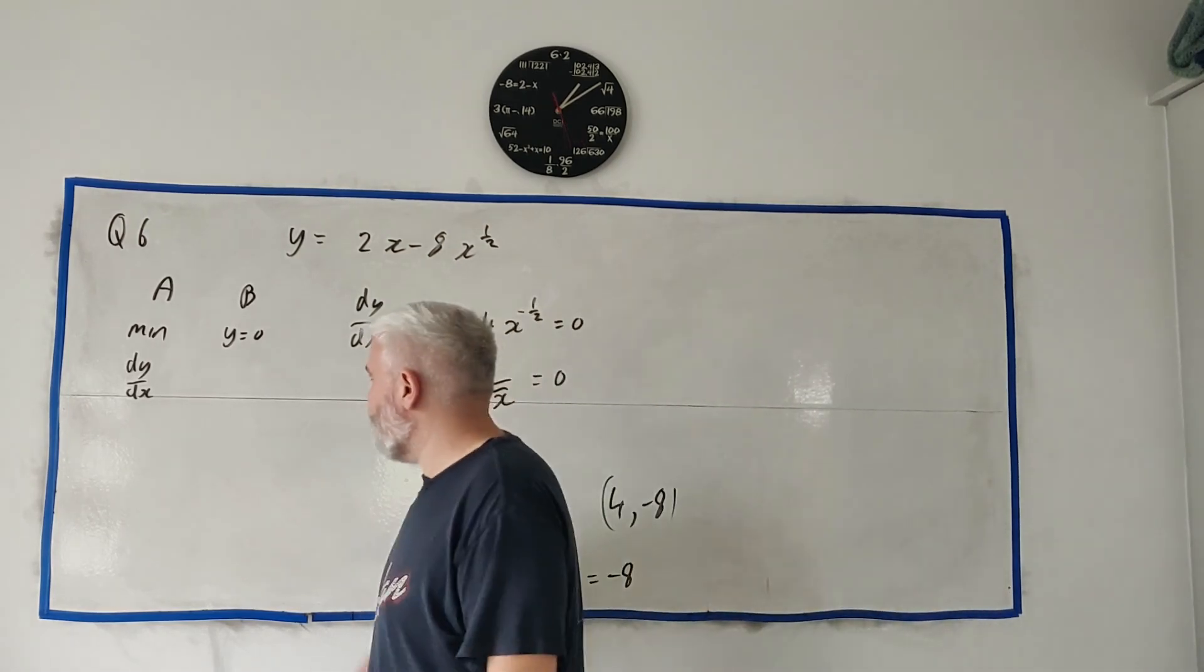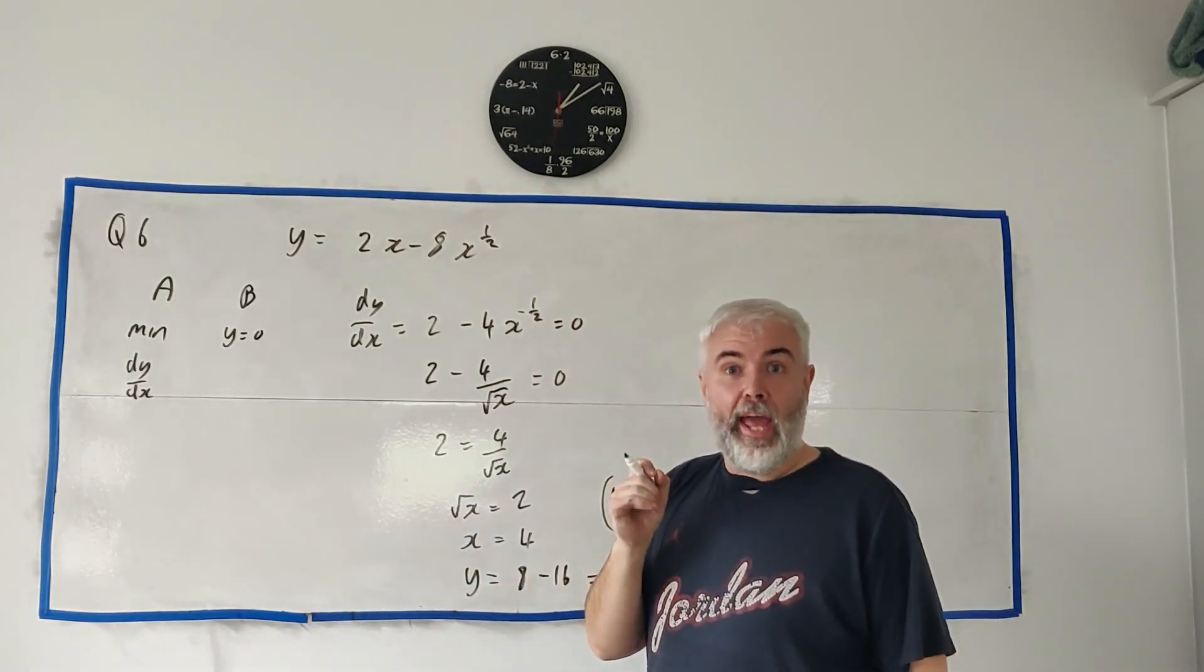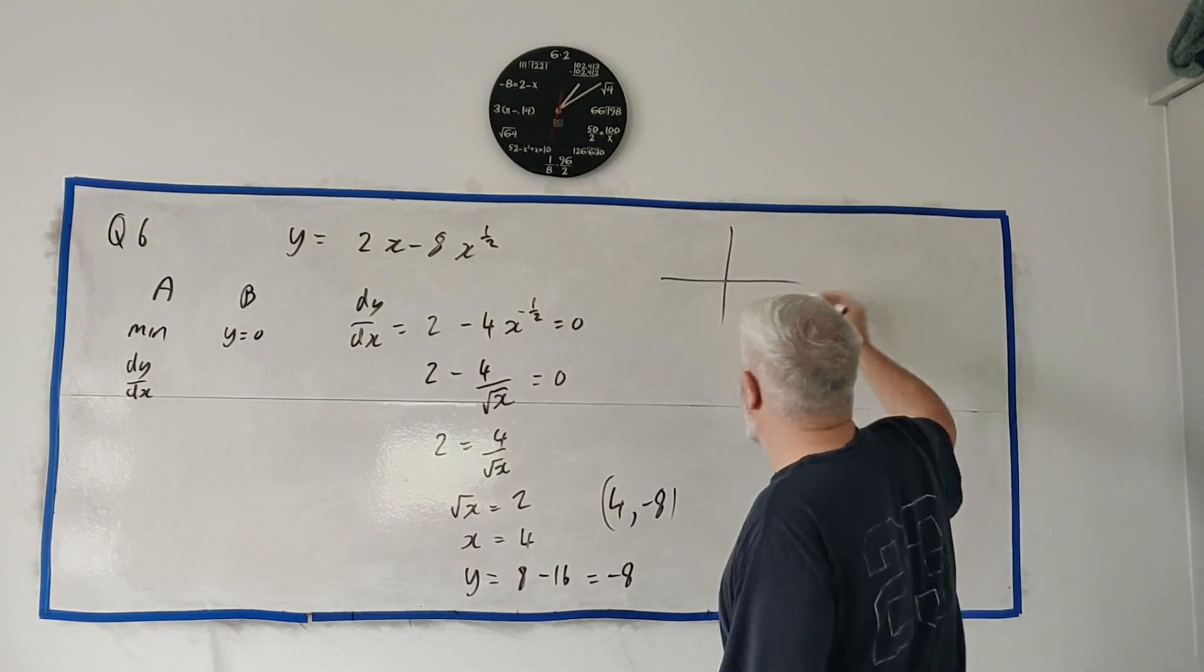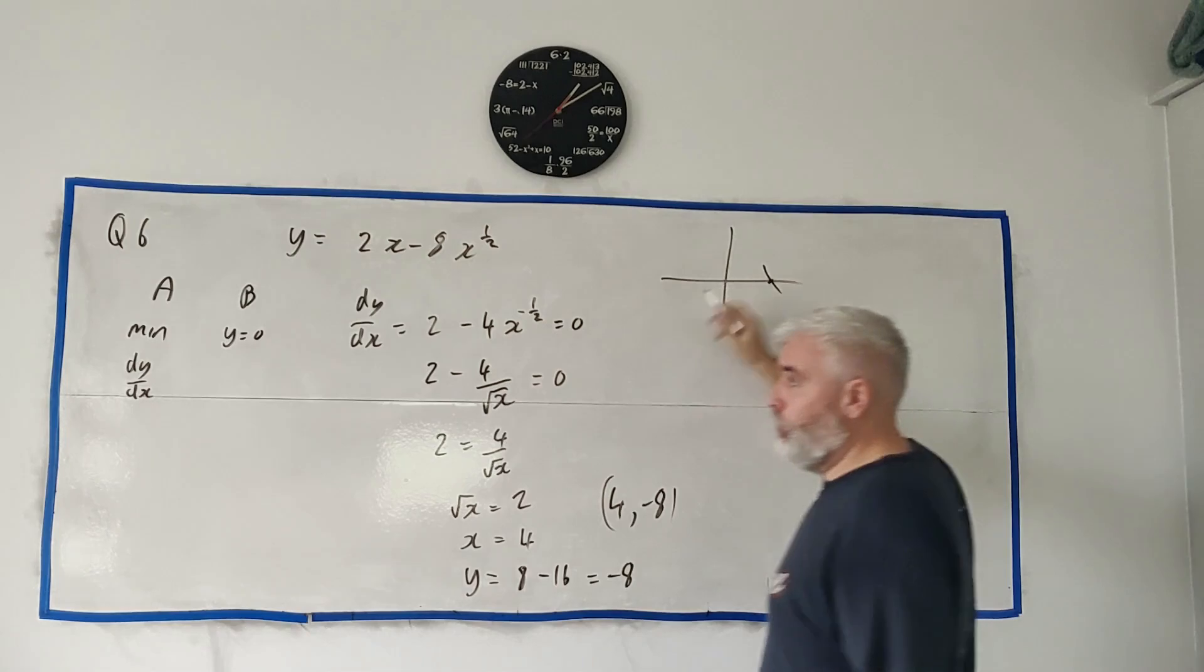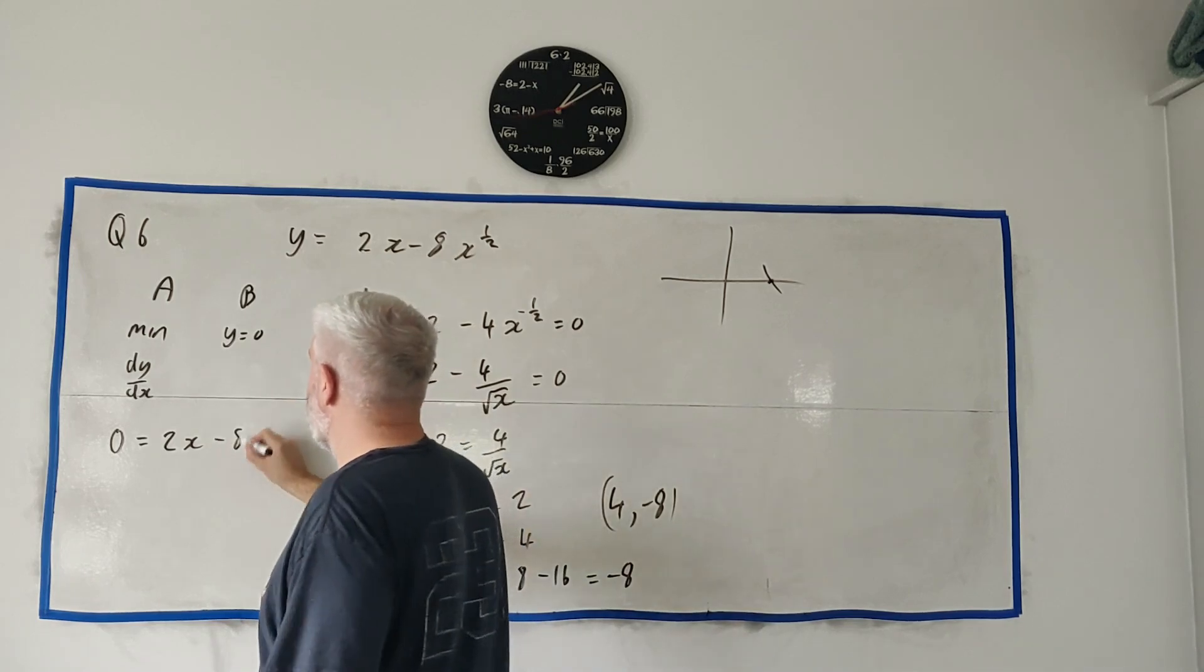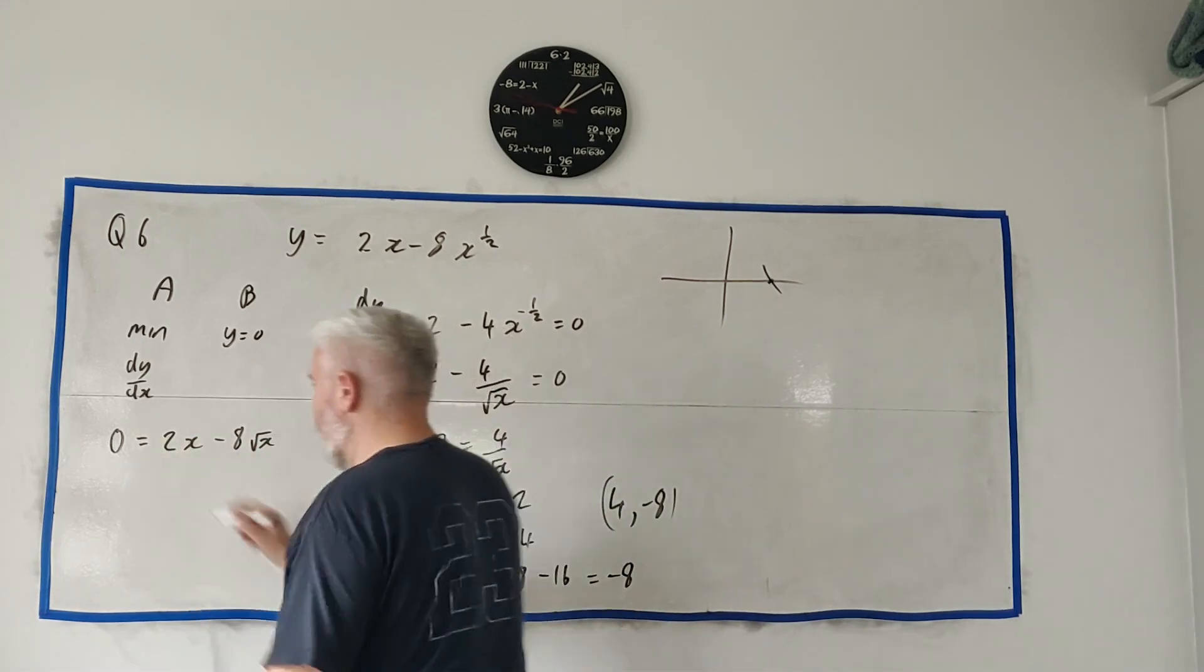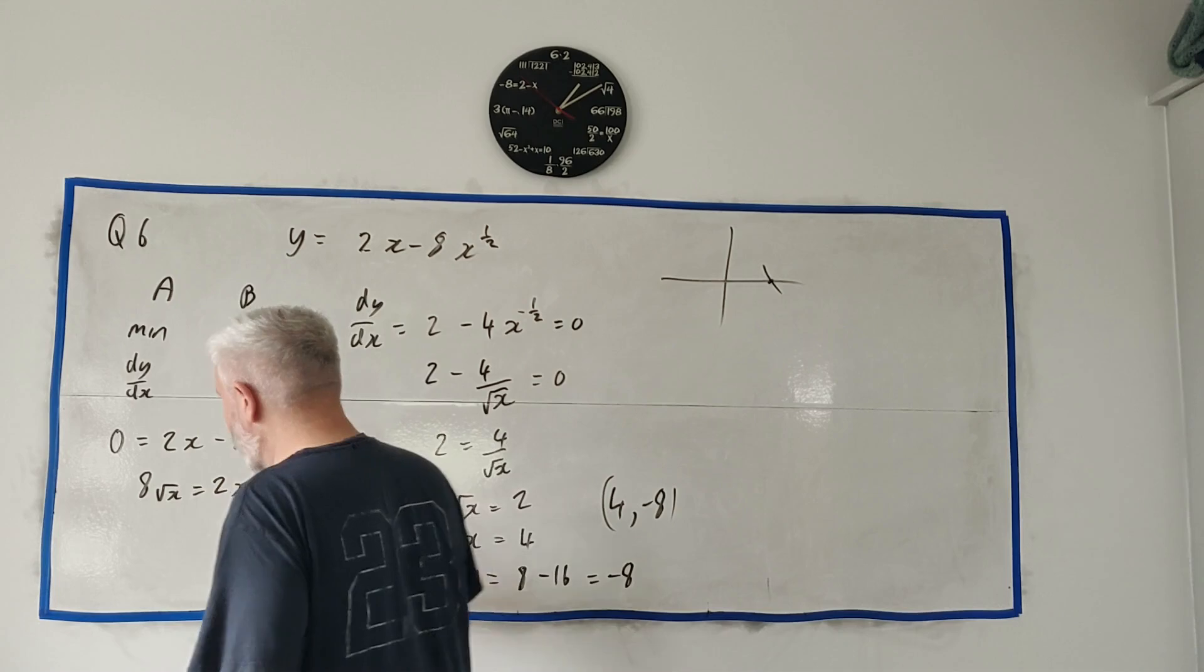Let's squeeze B down here. Remember what we know about B. It hits the x-axis. Anything that hits the x-axis must have a y equal to 0. So y equals 0. Let's write this again. 0 is equal to 2x minus 8 times the square root of x. Add that to both sides. We get 8 square root of x is equal to 2x.